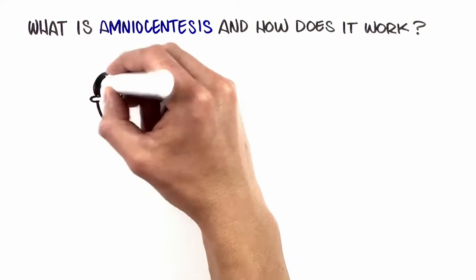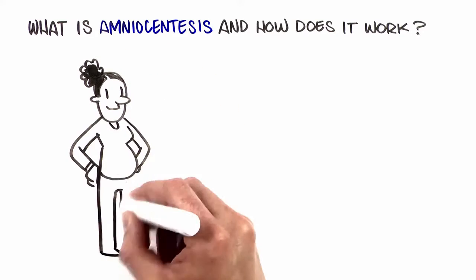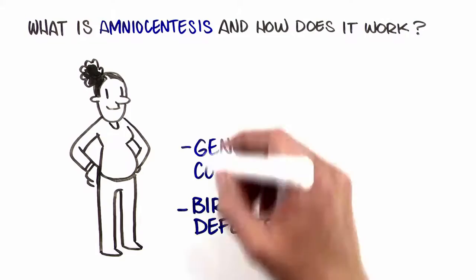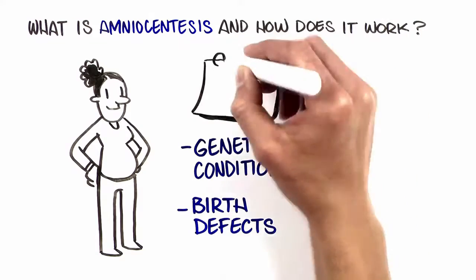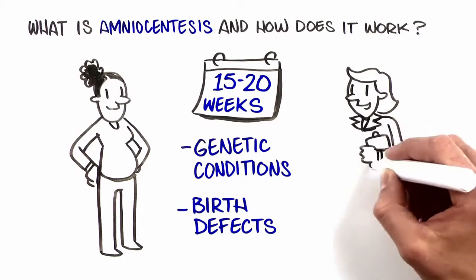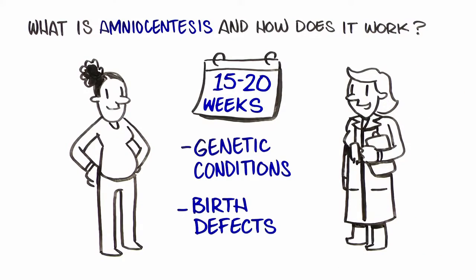Amniocentesis is an optional procedure that can be done in pregnancy to test for certain genetic conditions and birth defects. Amniocentesis is usually performed at approximately 15 to 20 weeks of pregnancy at a doctor's office that specializes in doing this procedure.